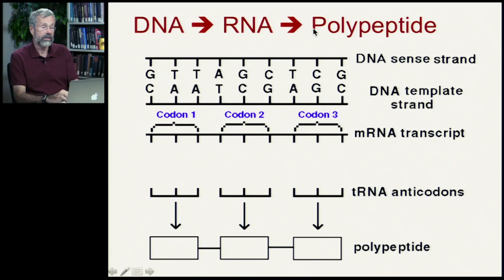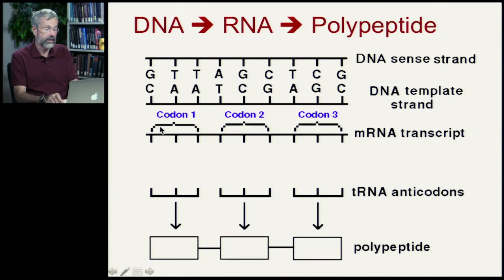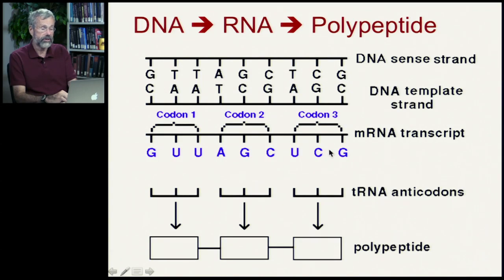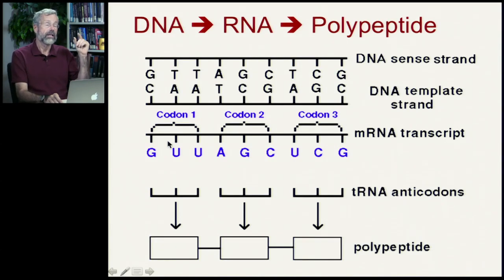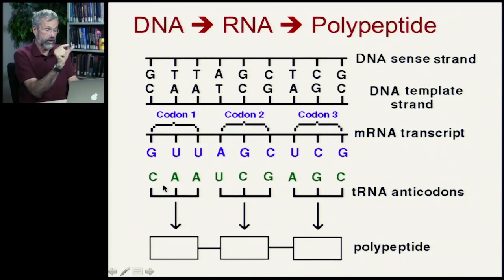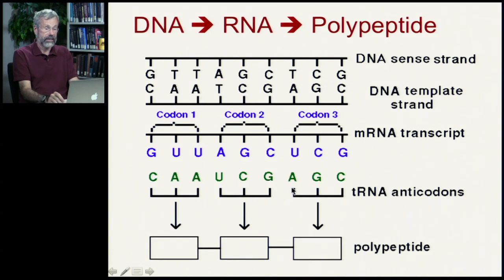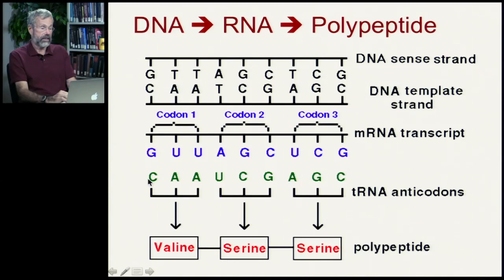So we go from DNA to RNA to a polypeptide. We have our double-stranded DNA molecule with the sense strand and the template strand — we transcribe the template strand. The complementary partners go from GATTACA to GUAC: G with C, U with A, A with T, and so on. The messenger transcript is then read in translation according to these codons, every 3 nucleotides along the chain. Transfer RNA molecules bring their anticodons in to match the codons — for example, CAA matches GUU, and UCG matches AGC — each delivering their own specific amino acid. In this case, this DNA template ultimately codes for three amino acids in the polypeptide: valine, serine, and serine.